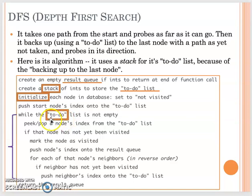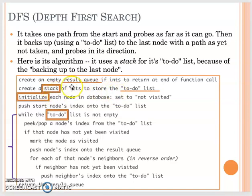After finishing, the output cities will be the same as in the BFS search, but the order will be different. After you understand BFS, you just need to change the order slightly and change the to-do from a queue to a stack.